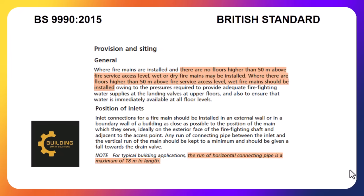If the building height is not more than 50m, the system can be installed with wet or dry mains. If the building is higher than 50m, the fire mains feeding floors above 50m must be wet. The horizontal run for connecting pipe must not exceed 18m in length in any case.